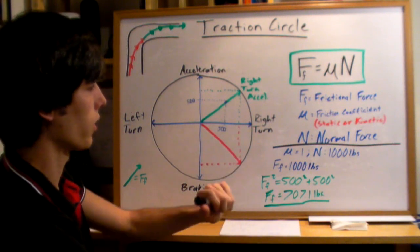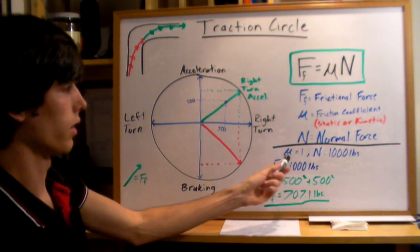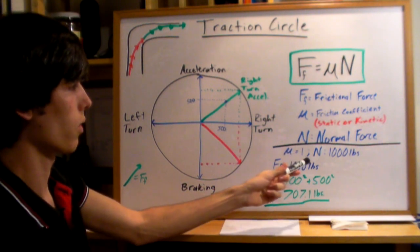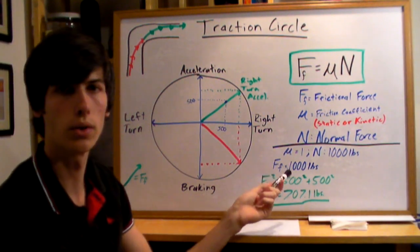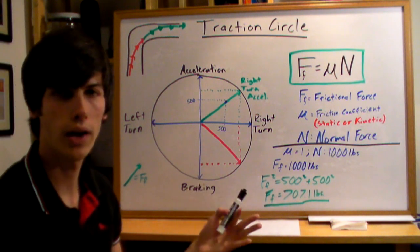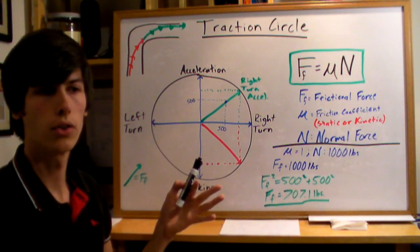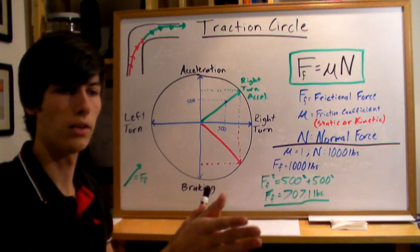Let's just do a little example. Let's say you have a 1,000 pound car, and the mu, the static friction coefficient, is 1. So the frictional force that your car can withhold is 1,000 pounds. Let's say we want to use 500 of those pounds to accelerate, and 500 of those pounds to turn.